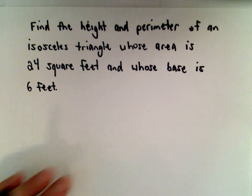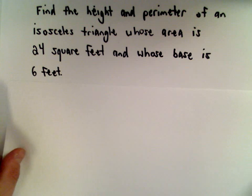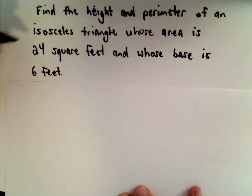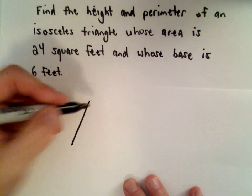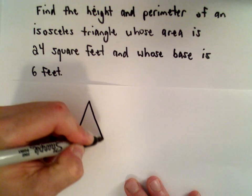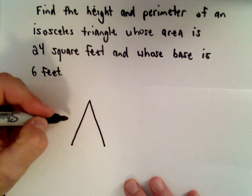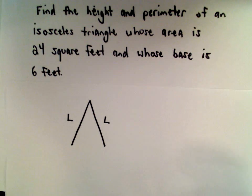So we've got a couple things to do in this example and a couple things to remember. First off, recall that an isosceles triangle is a triangle that has two sides that are the exact same length. Maybe I'll call it length L and length L. I don't know what they are, but they're the same.